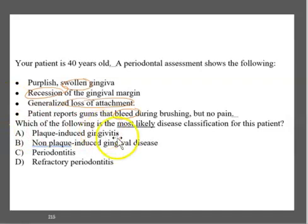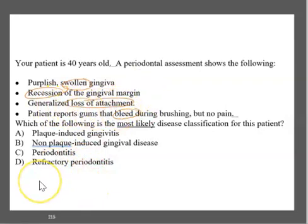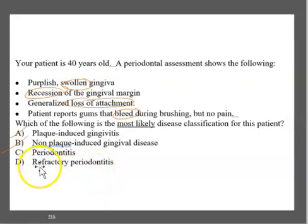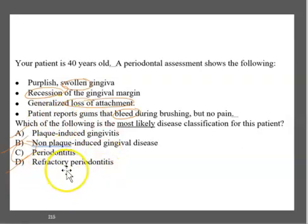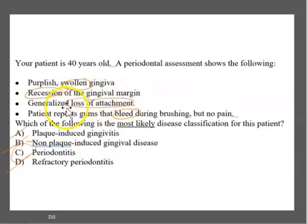The key distinction between gingivitis and periodontitis: gingivitis has no attachment loss and no bone loss, while periodontitis does. Because this patient has loss of attachment, it cannot be gingivitis. Between C and D, there's no indication that the patient is doing everything they can, so we cross out refractory periodontitis. The answer is C — periodontitis — because there is loss of attachment, which is the number one reason.